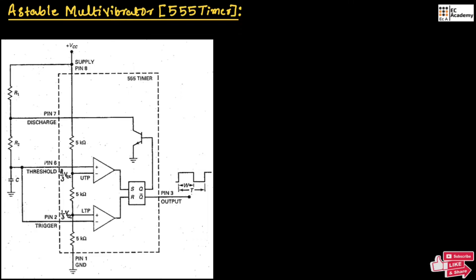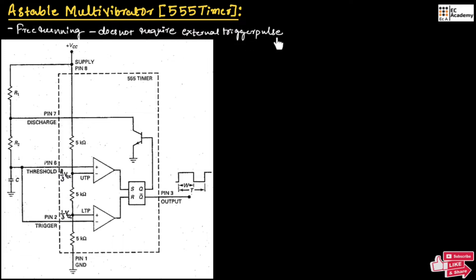An astable multivibrator is a free-running multivibrator which does not require any external trigger pulse to produce output. Once we connect the power supply to the circuit, the 555 timer will start producing the output without any trigger pulse. Resistor R1 and R2 will drive the entire circuit and help in producing the free-running output.